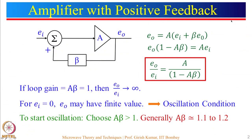Hello and welcome to the second lecture on Microwave Oscillator. In the previous lecture, I started with amplifier with positive feedback and we had seen that oscillation condition occurs when loop gain A·beta is equal to 1. I had recommended choosing A·beta around 1.1 to 1.2 to start the oscillation.